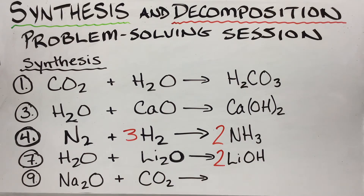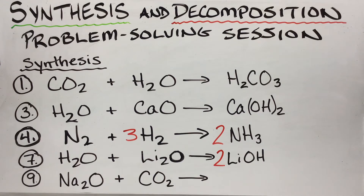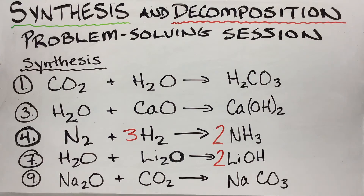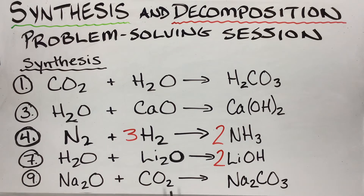Next: sodium oxide and carbon dioxide. This looks like a double displacement, but both end in oxygen, so you can't switch partners and end up with anything different. It has to be a synthesis. Put the metal first — Na — then add the rest: C with two O's and a third O gives carbonate. Sodium has a charge of one, carbonate has a charge of two. Crisscross to get Na₂CO₃, sodium carbonate. Everything balances.